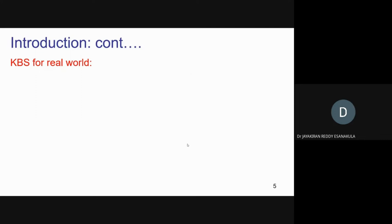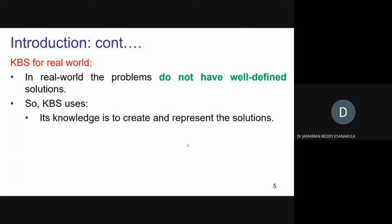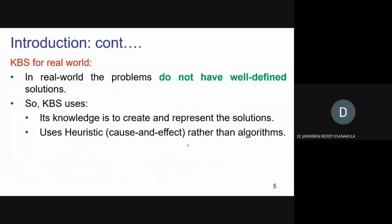For real-world applications, how exactly can KBS be used? Problems in the real world do not have well-defined solutions — there is no guarantee that there will be a solution for every problem. KBS can be used for these purposes. Its knowledge is used to create and represent solutions. It uses futuristic cause-and-effect reasoning rather than algorithms.